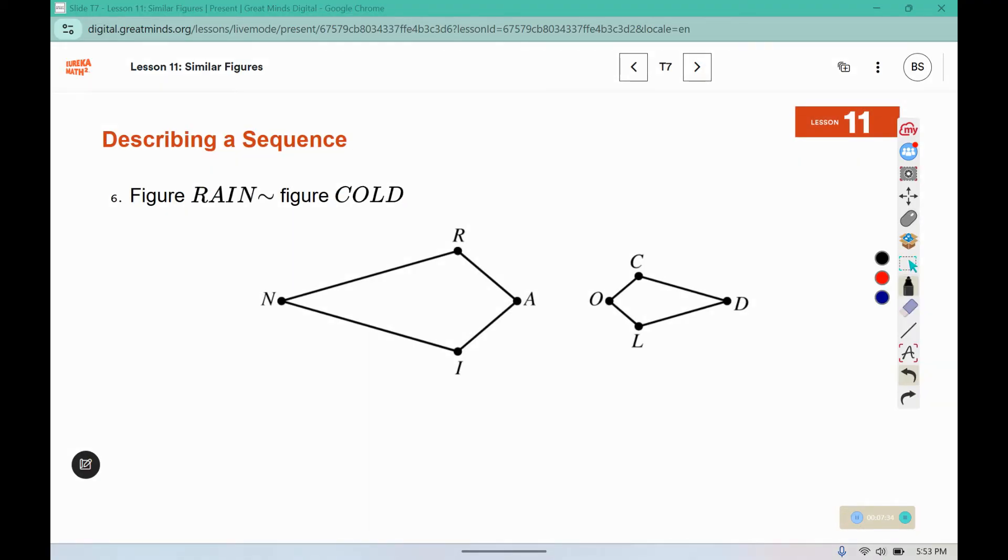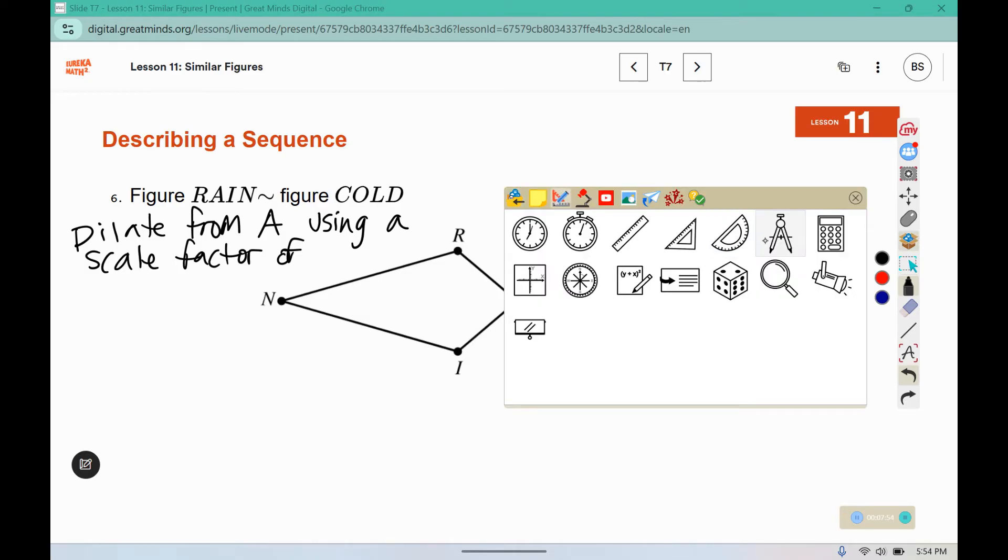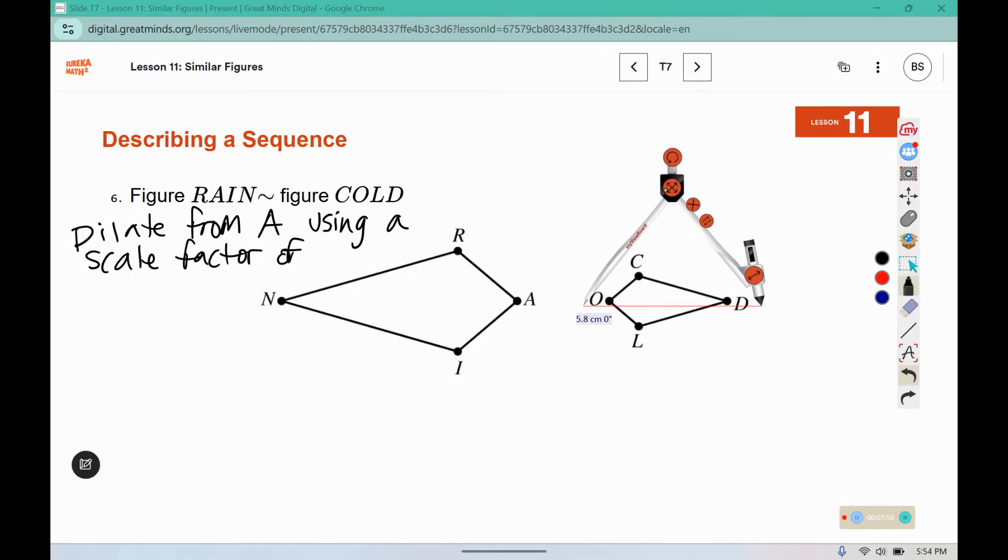Here we see this is also going to require a dilation, because it's a different size. You can pull out our compass as a guide. So let's see, O to C, and then if we compared O and C, should we match up with A and R.